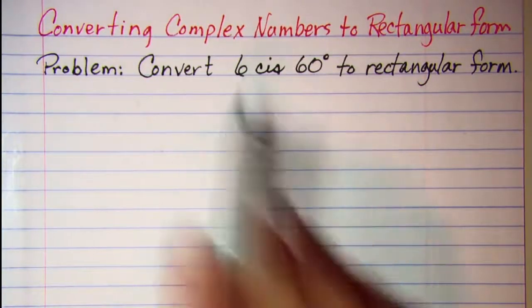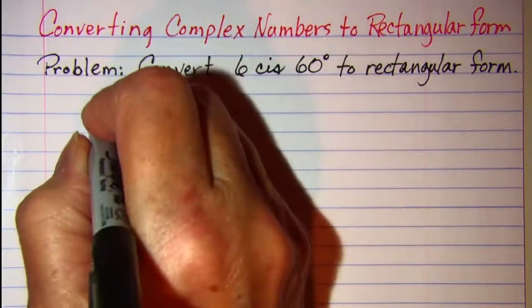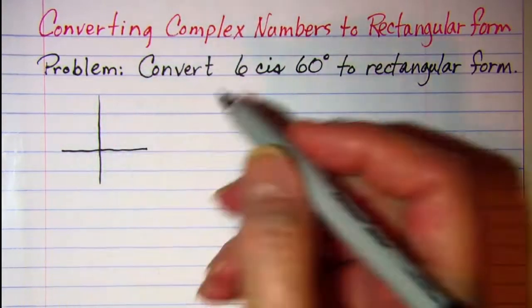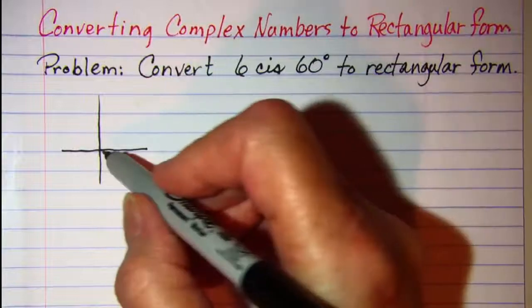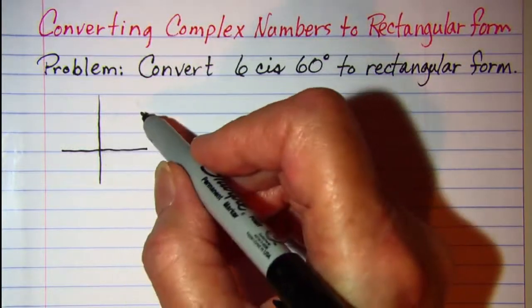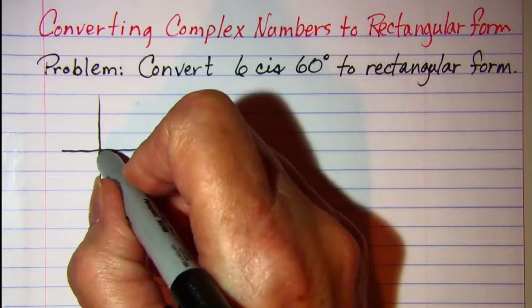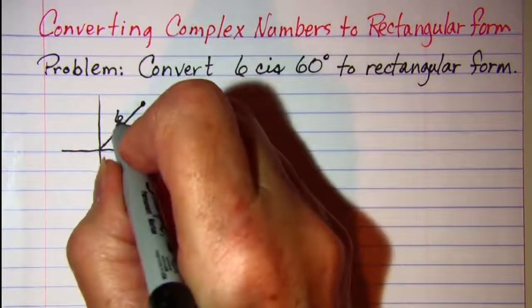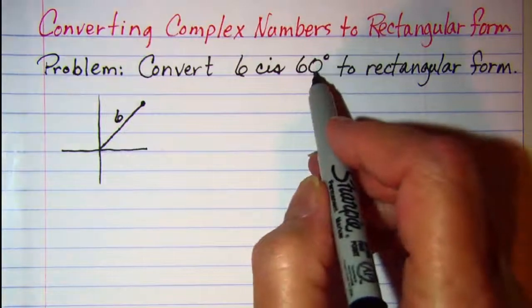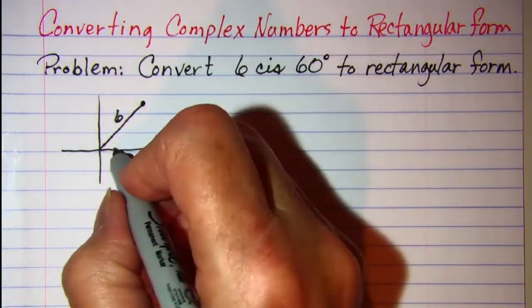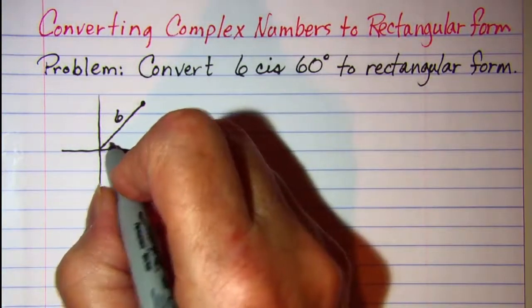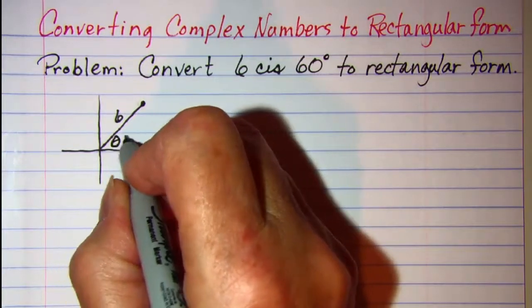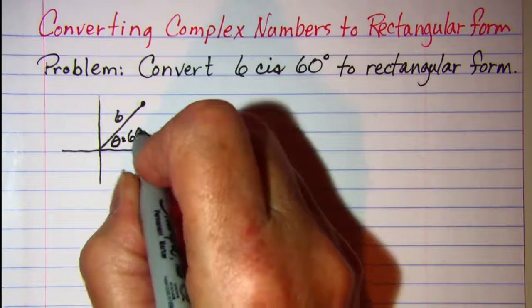So the 6 is our distance from the origin to the terminal point of the vector. So I'll just sketch that right there. We have 6 here and then the 60 is our angle of rotation which is theta and we'll call that 60 degrees.